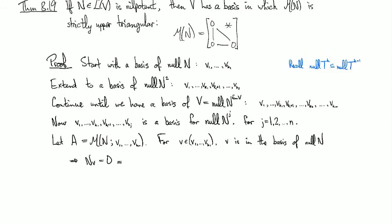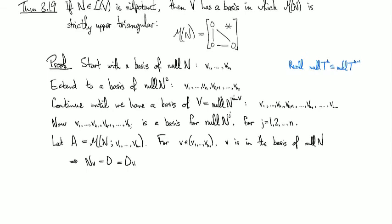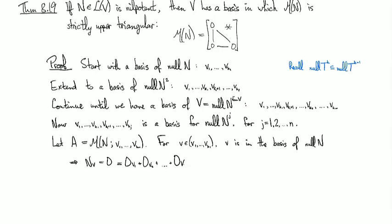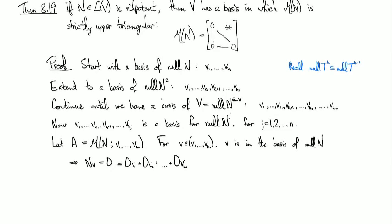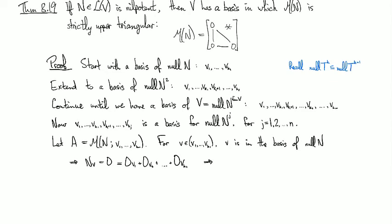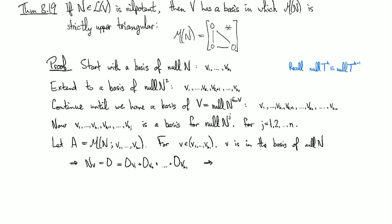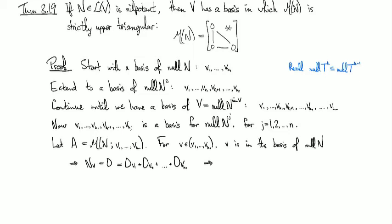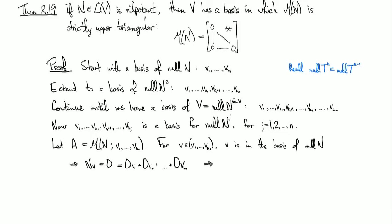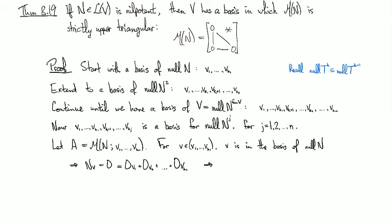And that means that in terms of the coordinates, that's zero V1 plus zero V2 plus zero VK1. And so what that means is all of the entries in the first column, because we're looking at... oh, I didn't say that, did I? Well, yeah, no, actually for all of the first columns. So for the first K1 columns, all of the entries are going to be equal to zero.